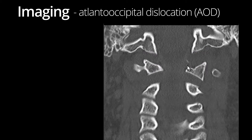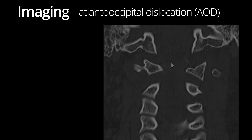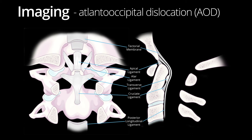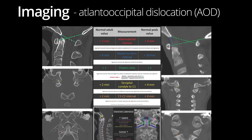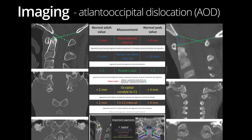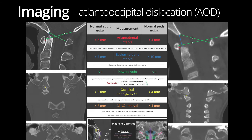As mentioned before, the alar ligaments and the transverse ligament are the most important stabilizers of the cranio-cervical junction. They are usually injured in cases of widening of the basion-to-dens interval. Both the basion-to-dens interval, as well as the atlanto-occipital joint measurements mentioned, are referenced in this review illustration, which is included below, as well as on the Spine Trauma Lesson page.